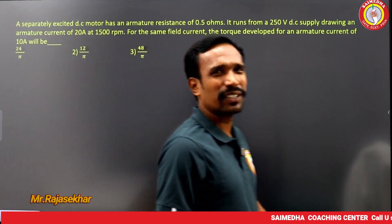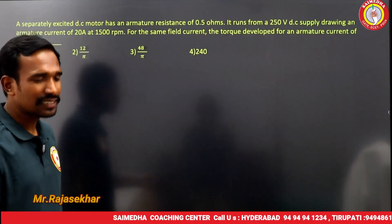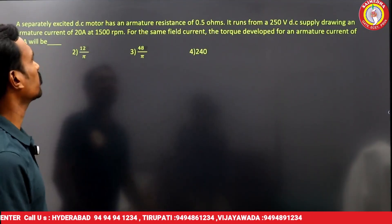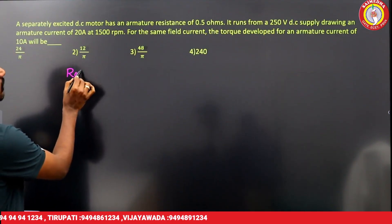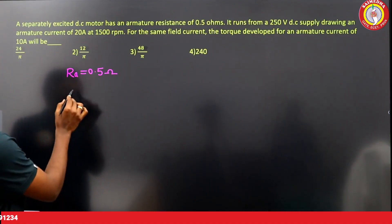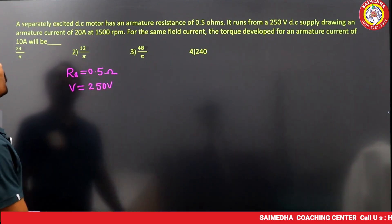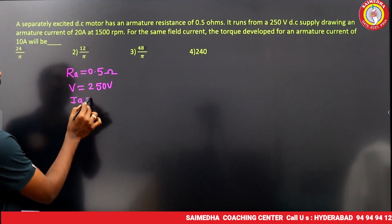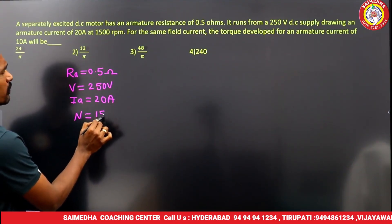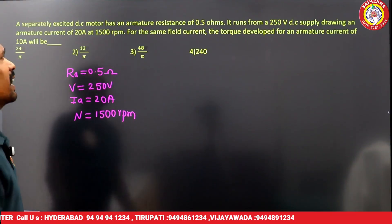In this video we are going to discuss a few questions on DC motors. A separately excited DC motor with armature resistance 0.5 ohms runs from a 250 volt supply, drawing an armature current of 20 amperes, rotating at 1500 rpm.